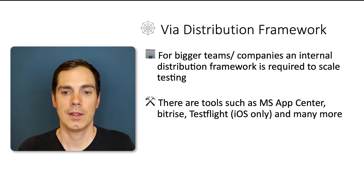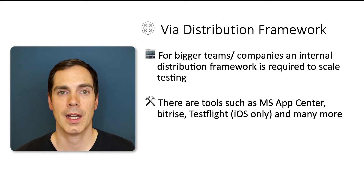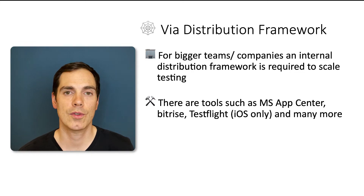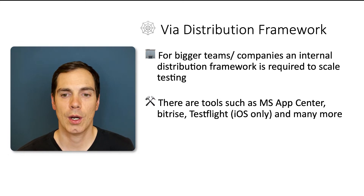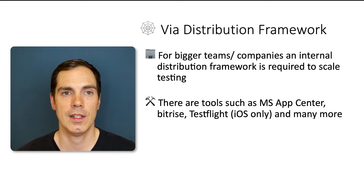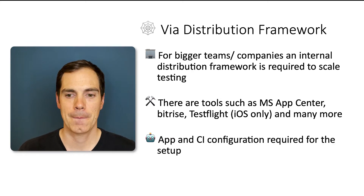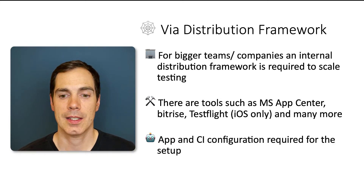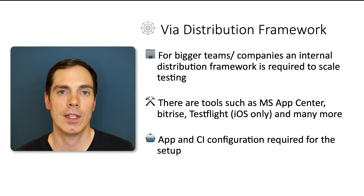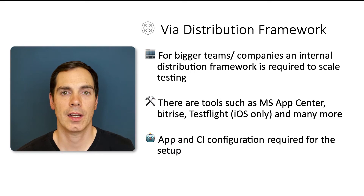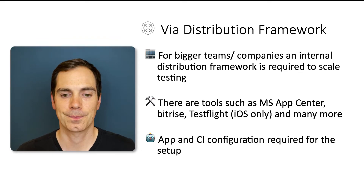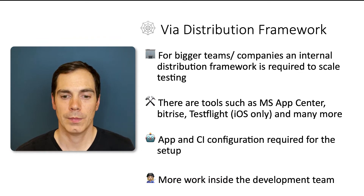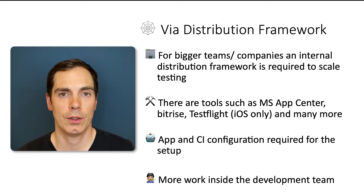What you can do is build your app, test your app, then upload the app to the distribution framework. Anyone who has signed into that email list or distribution list automatically gets an app update saying, hey, there is a new app update available, please download and use it. That's really cool and easy to set up. Of course, it requires some app and CI configuration, but the setup is really straightforward. All the tools out there provide really nice tutorials and step-by-step guides on how to get started. It's a bit more work inside the development team, but not too much.